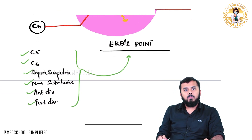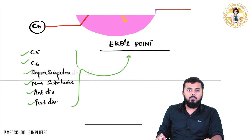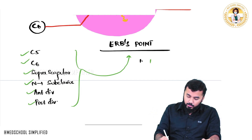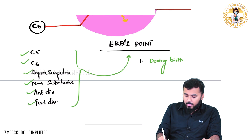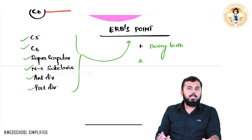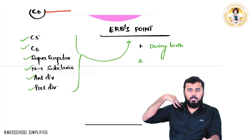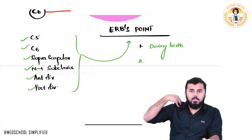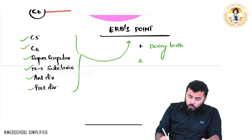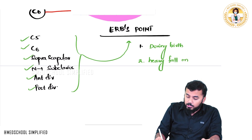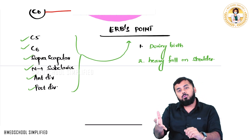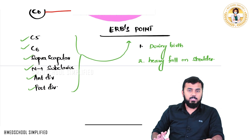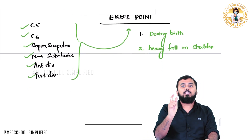During birth, when catching hold of the shoulders and pulling the baby out, there can be injury to the brachial plexus. Another reason is a heavy fall on the shoulder — for example, a branch falling on your shoulder. These are the two main reasons for brachial plexus injury, and in this case the patient will have a specific palsy called Erb's palsy.